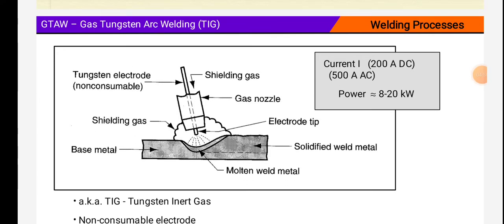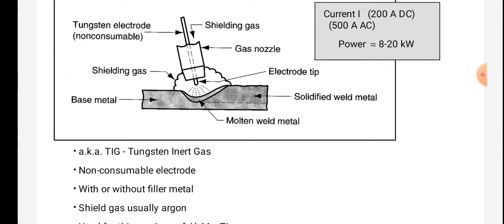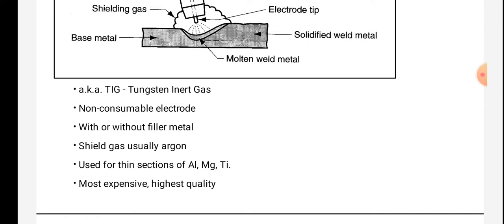GTAW Gas Tungsten Arc Welding, TIG. Tungsten electrode is shown in figure. Non-consumable, shielding gas, gas nozzle, electrode tip, base metal, solidified weld metal, molten weld metal. Current is 200 ampere DC to 500 ampere AC. Power is 8 to 20 kilowatt. TIG Tungsten Inert Gas, non-consumable electrode with or without filler metal. Shield gas argon. Used for thin sections: aluminum, magnesium, titanium. Most expensive, highest quality.